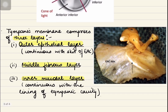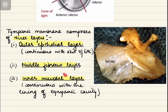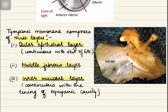The tympanic membrane is composed of three layers: the outer epithelial layer, the middle fibrous layer, and the inner mucosal layer. In this coronal section of the ear, the fibrous annulus is visible. The outermost epithelial layer is a continuation of the skin of the external auditory canal, and the innermost layer is the continuation of the mucosa of the tympanic cavity.